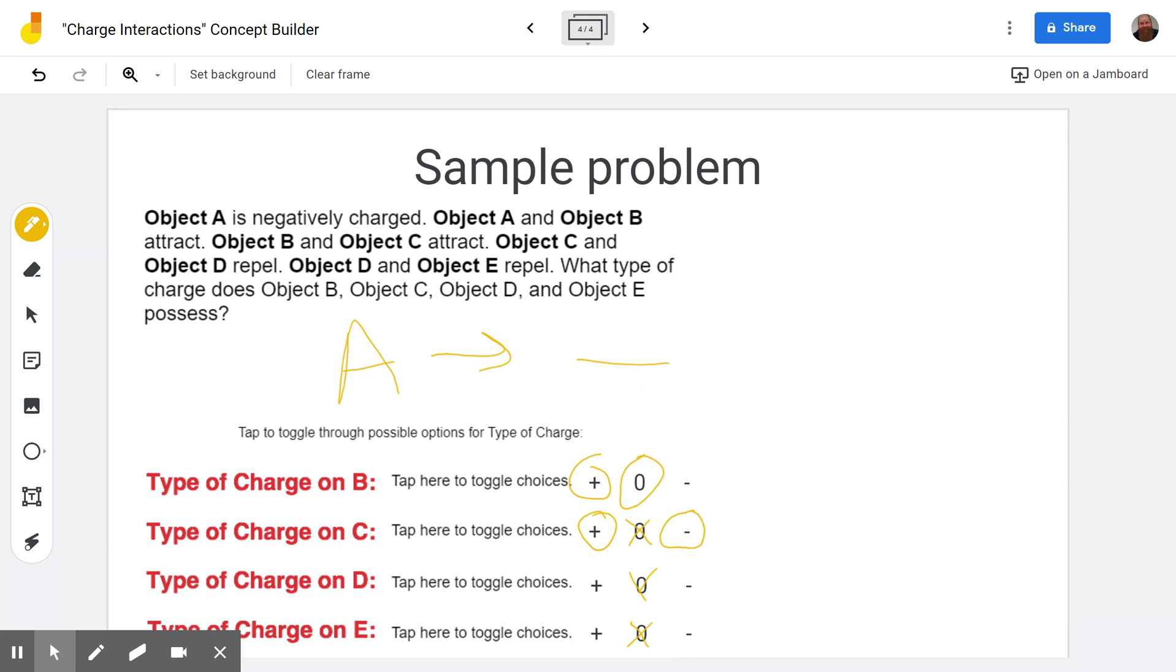So to carry that thought process on, if C is positive, then D would be positive because if they repel they have to have the same charge. And D repels E, so if D is positive, E is positive. But on the other hand, if C was negative, which is an option that we have currently, if C is negative, since it repels D, then D would have to be negative. And if D repels E, then they would have to have the same charge and E would be negative.